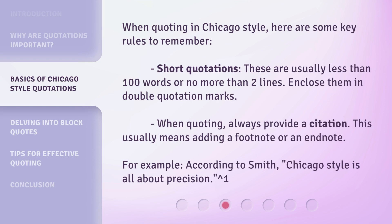When quoting in Chicago style, here are some key rules to remember. Short quotations are usually less than 100 words or no more than two lines. Enclose them in double quotation marks. When quoting, always provide a citation — this usually means adding a footnote or an endnote.